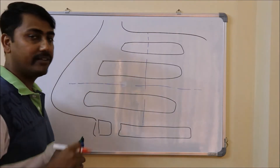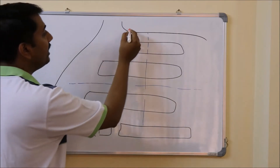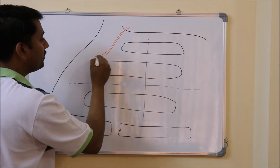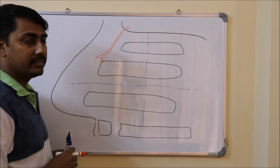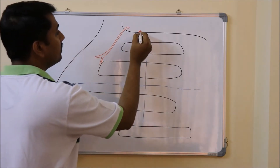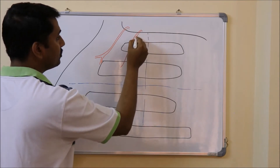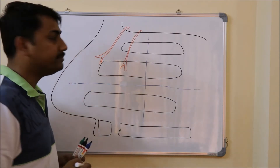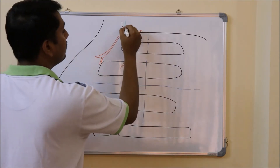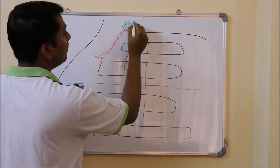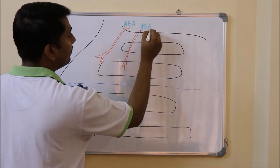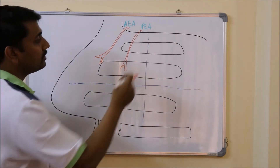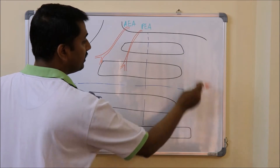First, look into the anterosuperior quadrant. The anterosuperior quadrant will be supplied by two arteries: the anterior ethmoidal artery, which is a branch from the ophthalmic artery in the orbit, and also the posterior ethmoidal artery, which is also a branch of the ophthalmic artery in the orbit. Let us mark the anterior ethmoidal artery and posterior ethmoidal artery.